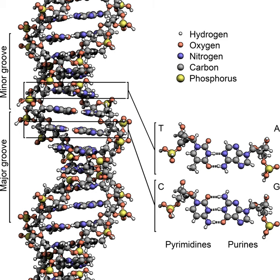A DNA helix does not usually interact with other segments of DNA, and in human cells, different chromosomes even occupy separate areas in the nucleus called chromosome territories. This physical separation of different chromosomes is important for the ability of DNA to function as a stable repository for information, as one of the few times chromosomes interact is when they recombine. Recombination is when two DNA helices break, swap a section, and then rejoin.